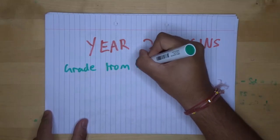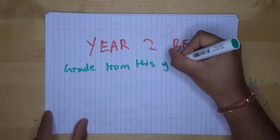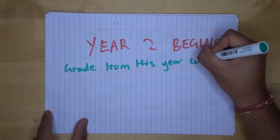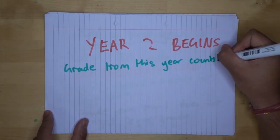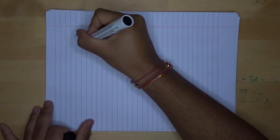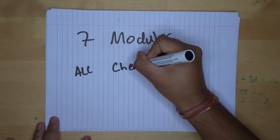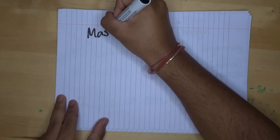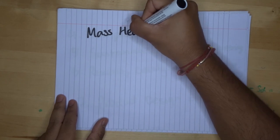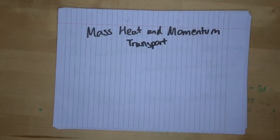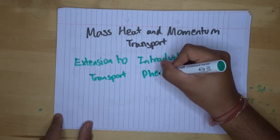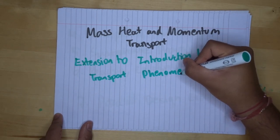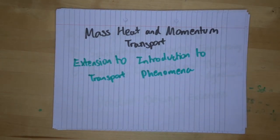And so now we will move on to discuss the modules that we have in the second year. You have to remember the grade from this year counts towards your degree grade at the end. There are seven more modules this year. The first module is mass heat and momentum transport, and all of these modules are related to chemical engineering. Now, this module is just an extension to introduction to transport phenomena, and it is made up of 20 credits. There's not much more I can say because you'll need to understand things from first year before you'll understand what I'm talking about here.